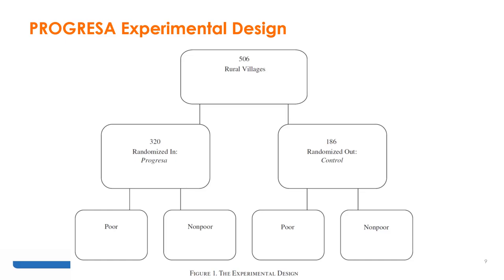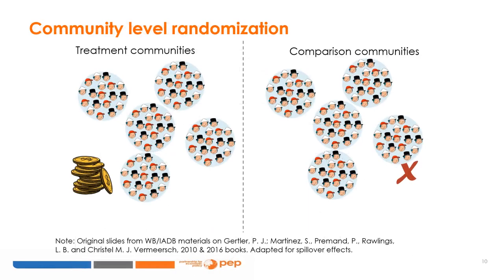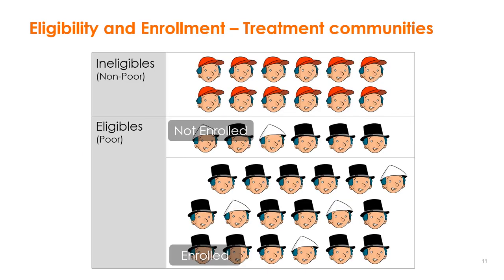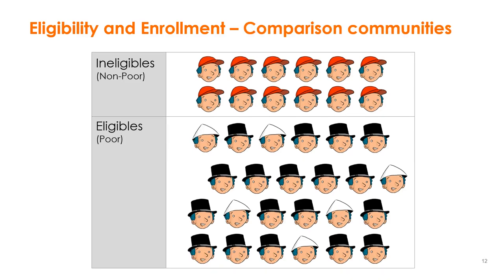Within both groups of villages, a poverty eligibility threshold was determined so that households classified as poor were eligible for the program and non-poor households were ineligible. So we had poor individuals in eligible and ineligible villages and non-poor individuals in both eligible and ineligible villages. The community-level randomization implied treatment and comparison communities. Within treatment communities, there were ineligible and eligible individuals, with some enrolled and some not enrolled. In comparison communities, we have ineligible non-poor individuals and eligible poor individuals, but none of the eligible individuals are enrolled because they belong to the control communities.